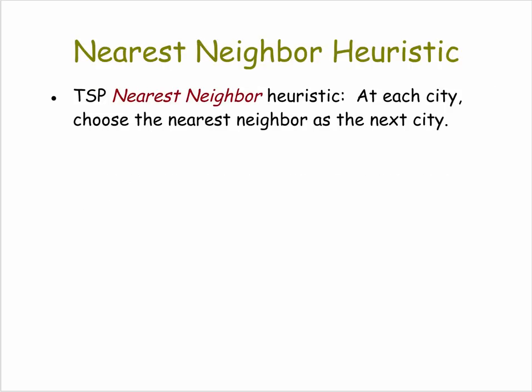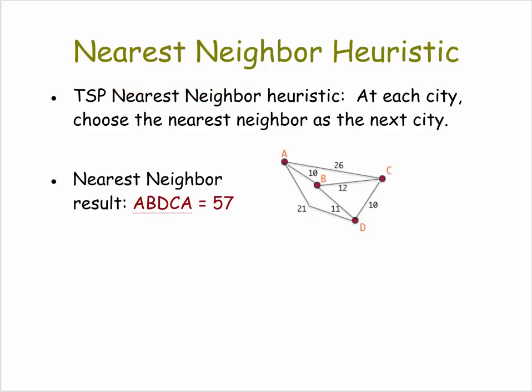We can look at one example: the nearest neighbor heuristic for the traveling salesman problem. It's simply this — at each city, choose the nearest neighboring city as the next city to visit. Here's an example with four cities A, B, C, and D. If you start at A and use the nearest neighbor algorithm, then you get a total cost for your trip of 57. That's pretty good, but it's not optimal.